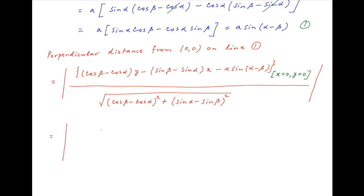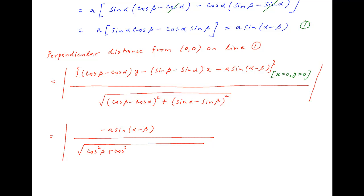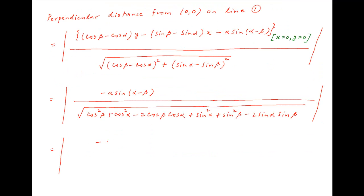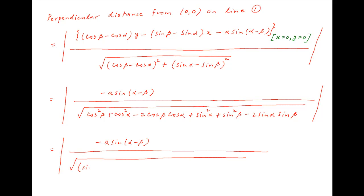This is equal to the absolute value of minus a·sin(α minus β) divided by the square root of cos²β plus cos²α minus 2·cos β·cos α plus sin²α plus sin²β minus 2·sin α·sin β, which gives the absolute value of a·sin(α minus β) over √[2 minus 2(cos α·cos β plus sin α·sin β)].